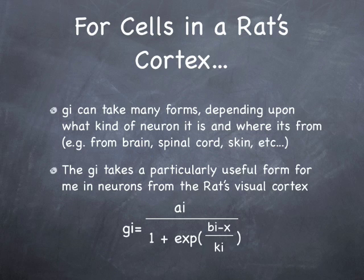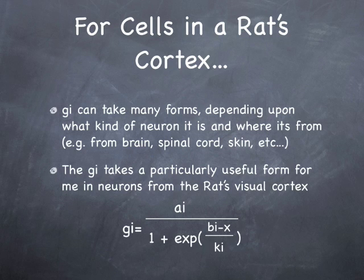But in rats, in the visual cortex of rats, they take a particularly useful form which I'm going to take as my point of departure here. Each of these Gi's takes the form of an equation that looks like this: some constant divided by 1 plus the exponent e to the (bi minus x) over ki. Okay. Now functions of this form are called, so this is basically the Hodgkin-Huxley equation for a rat's neuron.